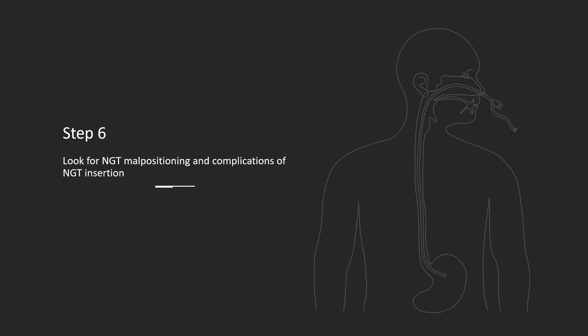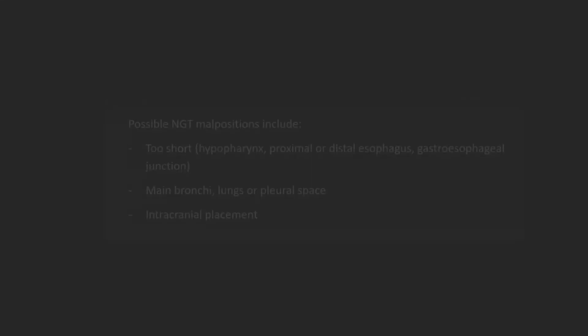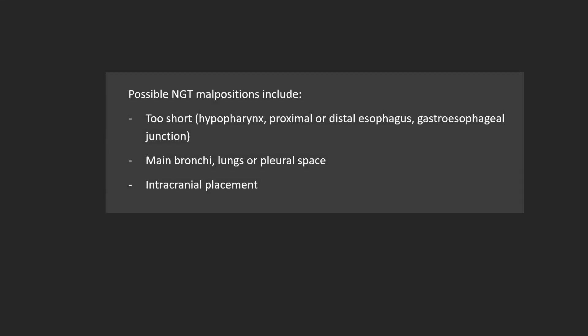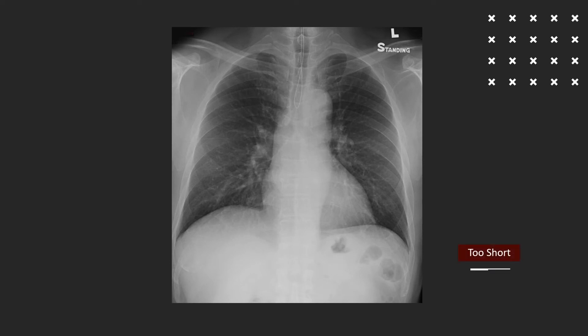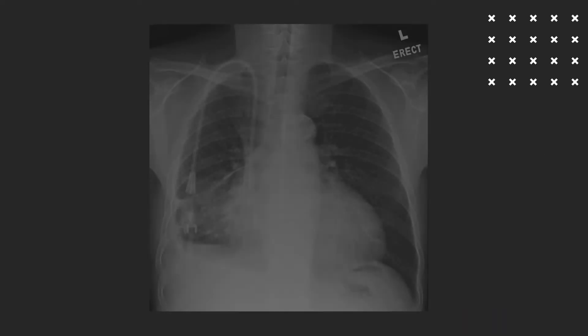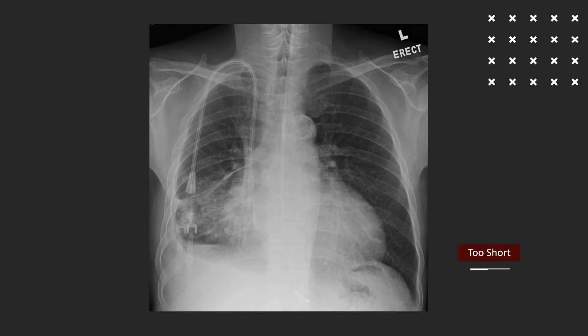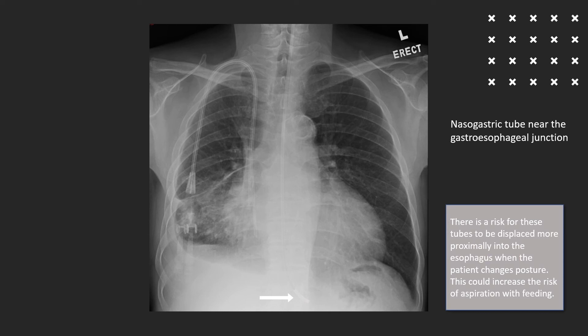Look specifically for nasogastric tube malpositioning and complications. The nasogastric tube is commonly too short, which could be due to the distal end looping upwards and returning to the hypopharynx or the upper third of the esophagus. The tip of the tube could also simply be too proximal within the distal esophagus, or even below the diaphragm but around the gastroesophageal junction rather than fully within the stomach.